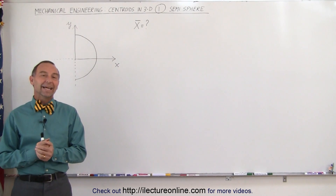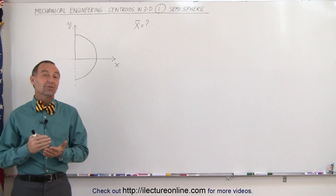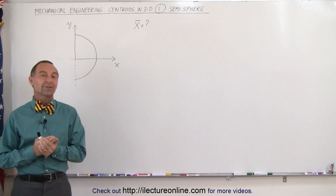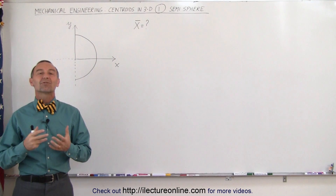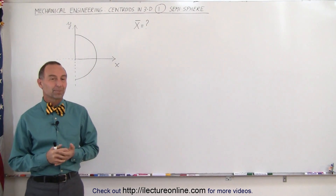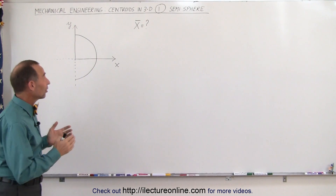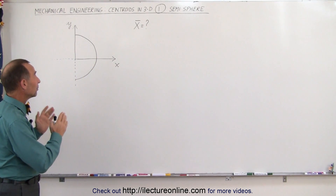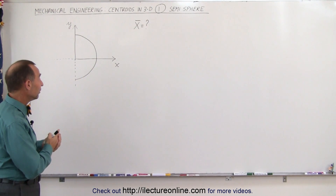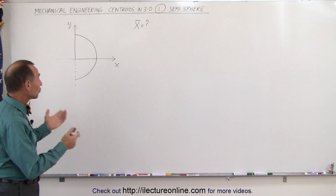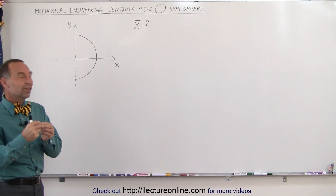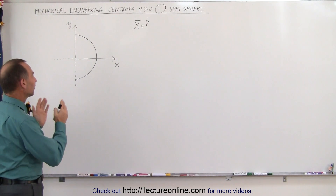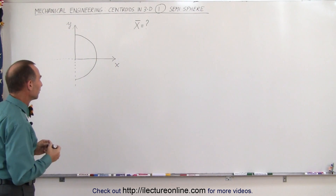Welcome to ElectronLine. In this new playlist, we're going to learn how to find the centroid of three-dimensional objects. We're going to start out with a semi-sphere, and what we're trying to do is find the centroid, or the center of mass, of a semi-sphere.